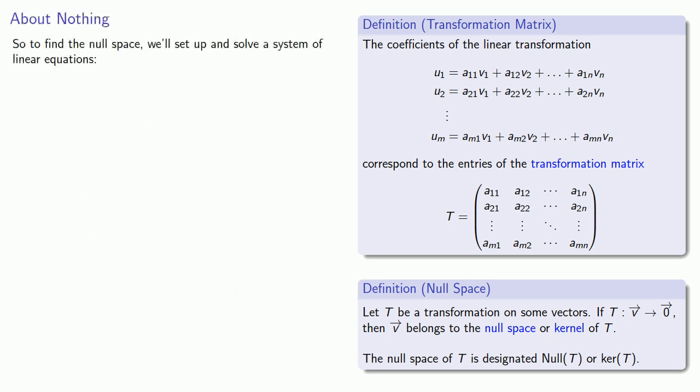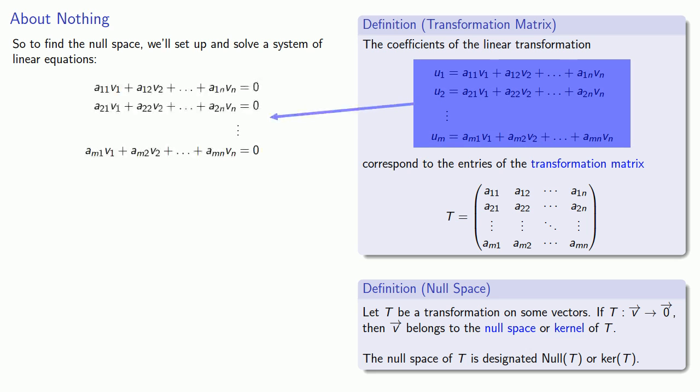To find the null space, we'll set up and solve a system of linear equations. Since we want to produce the zero vector, our components u₁, u₂, and so on are all going to be zero, and since we don't know what vectors are going to be in the null space, the components v₁ through vₙ are going to be our unknowns. That gives us a nice system of linear equations with a corresponding augmented coefficient matrix.